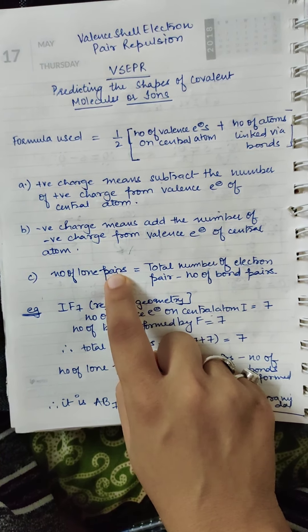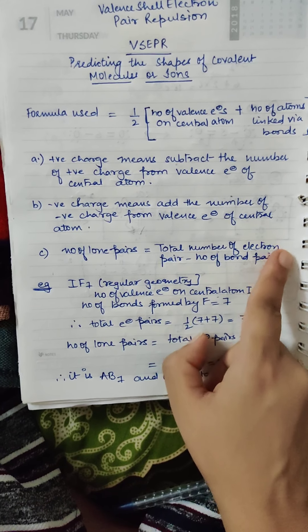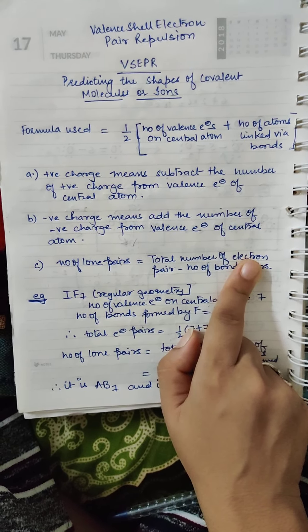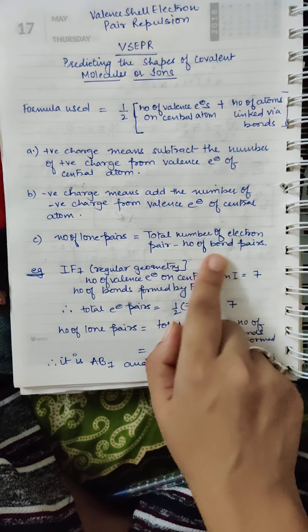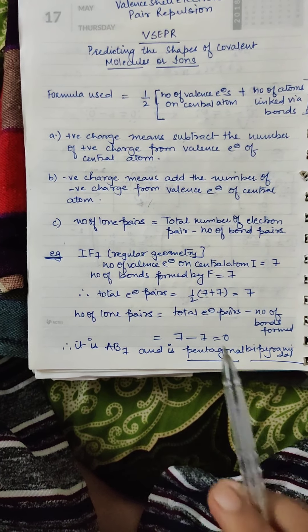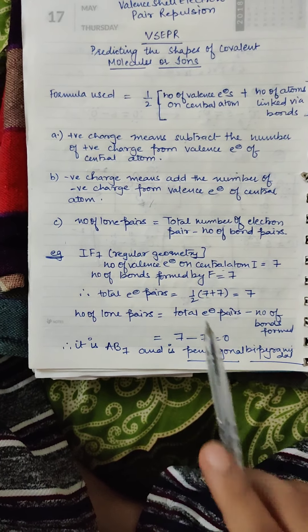To calculate the number of lone pairs, you use the formula: total number of electron pairs minus the number of bond pairs, that is, how many bonds are formed in the compound.